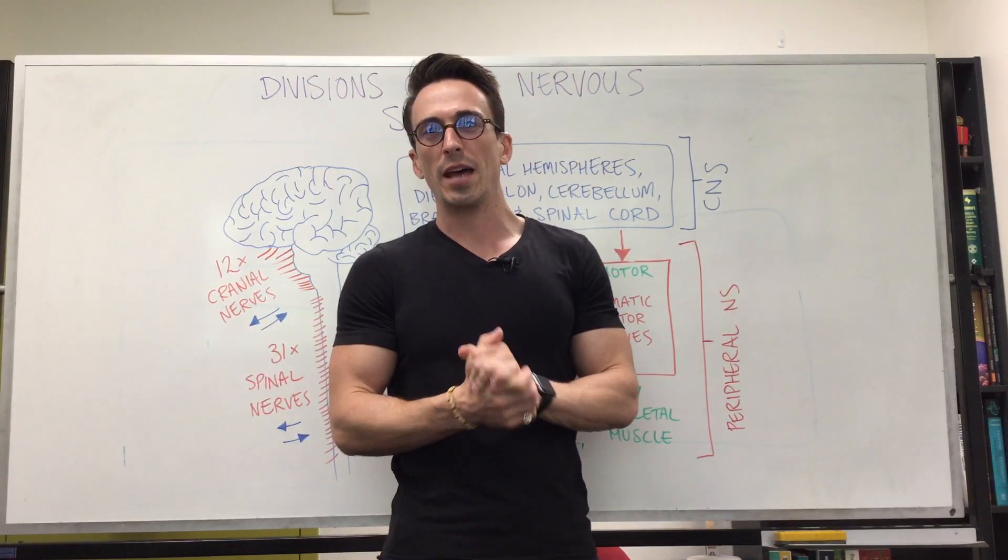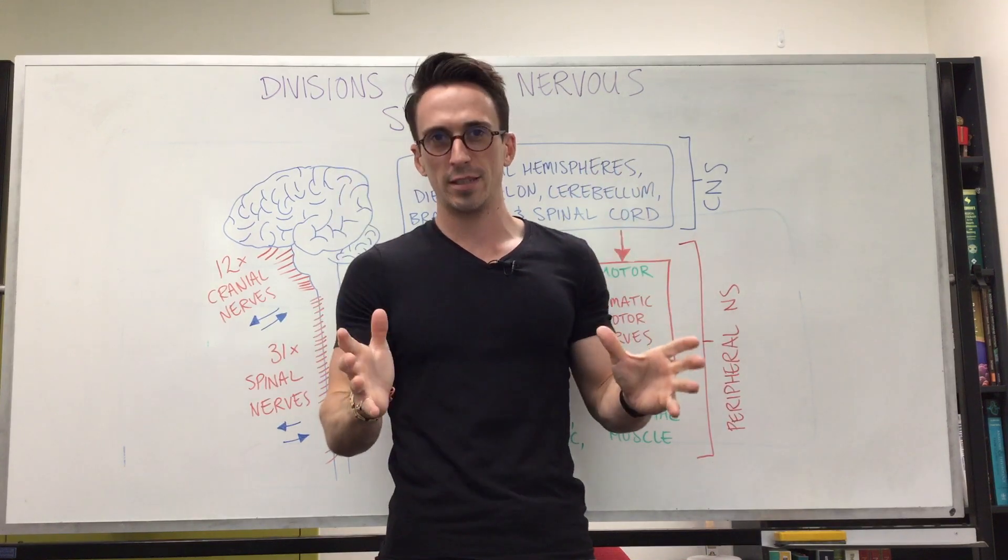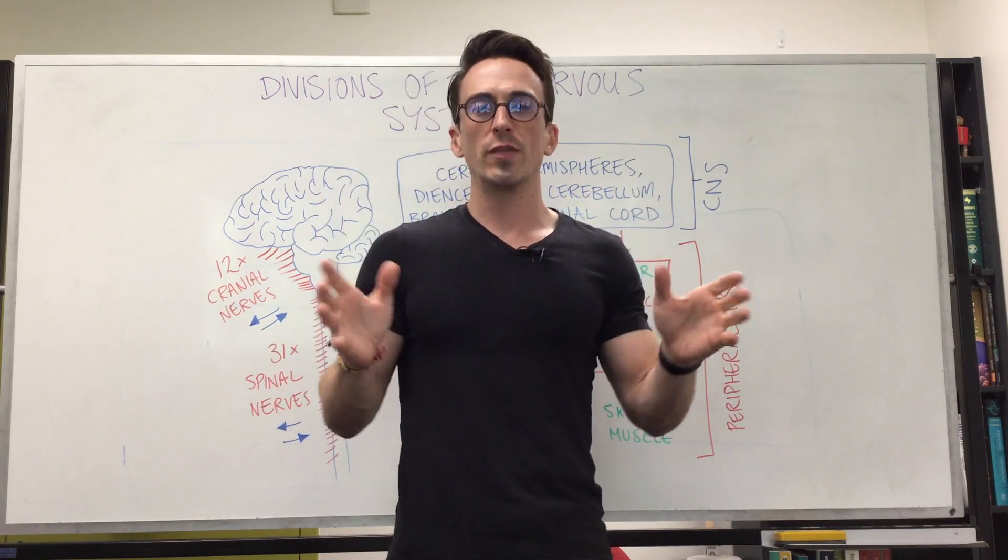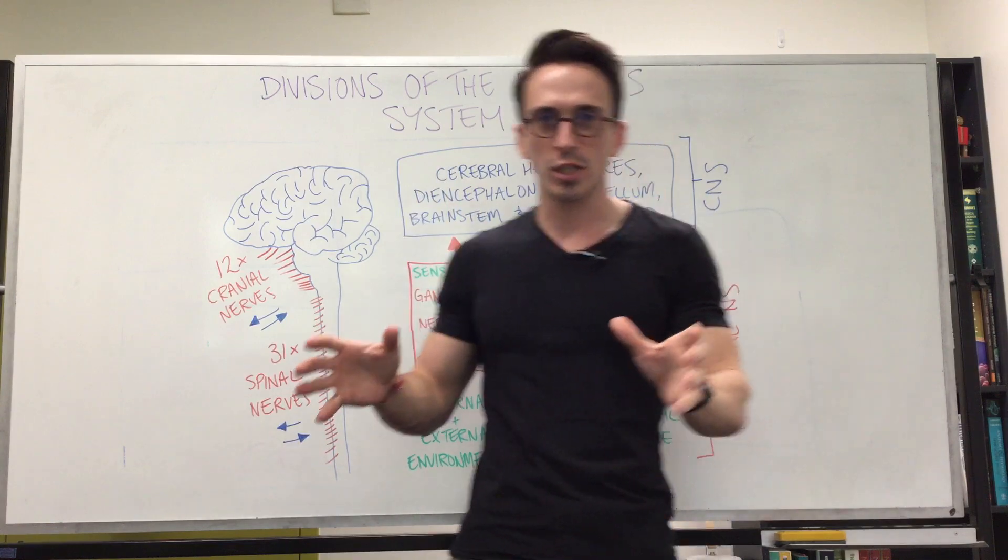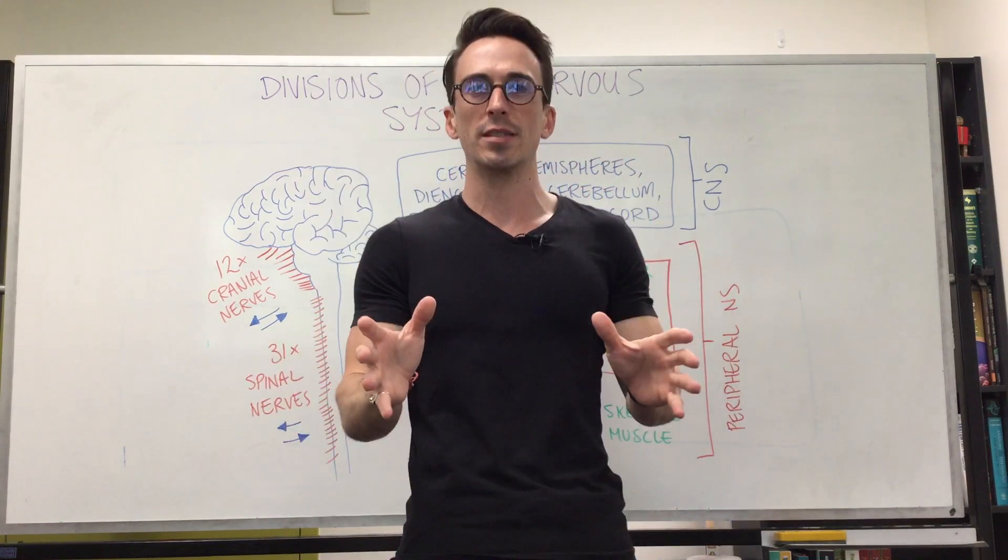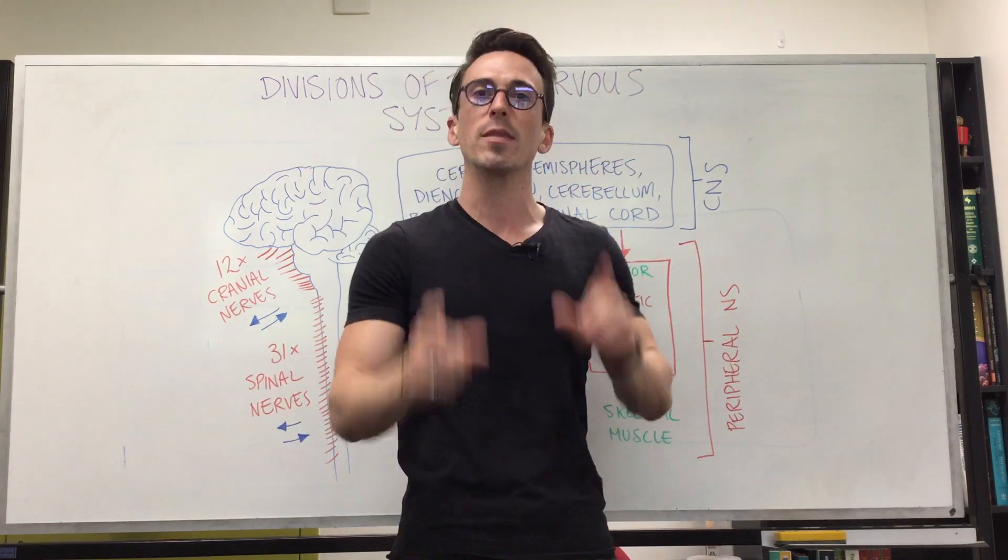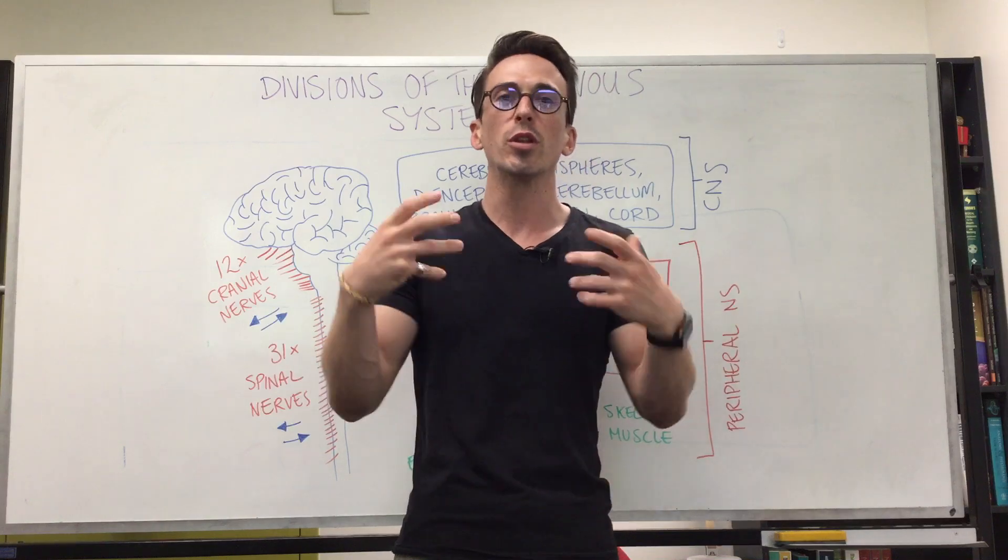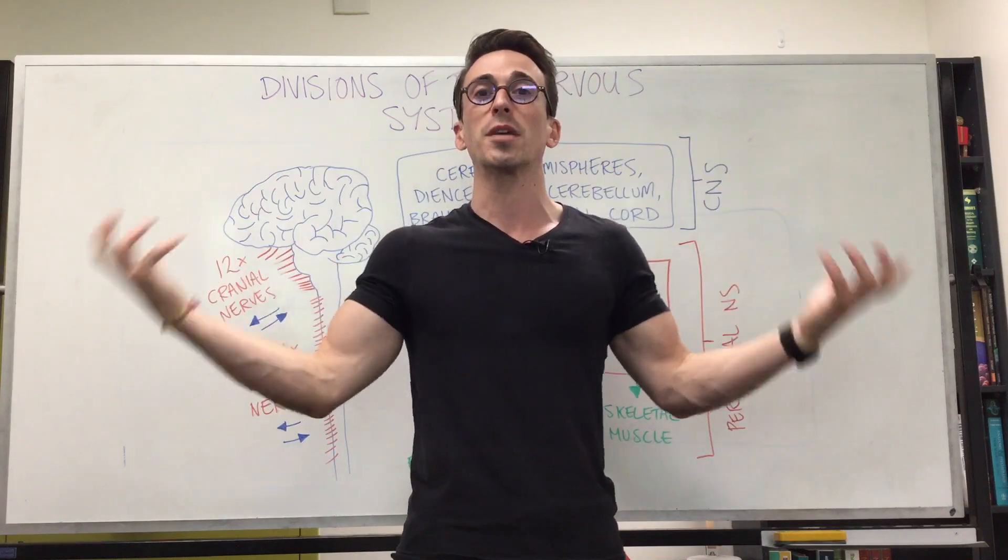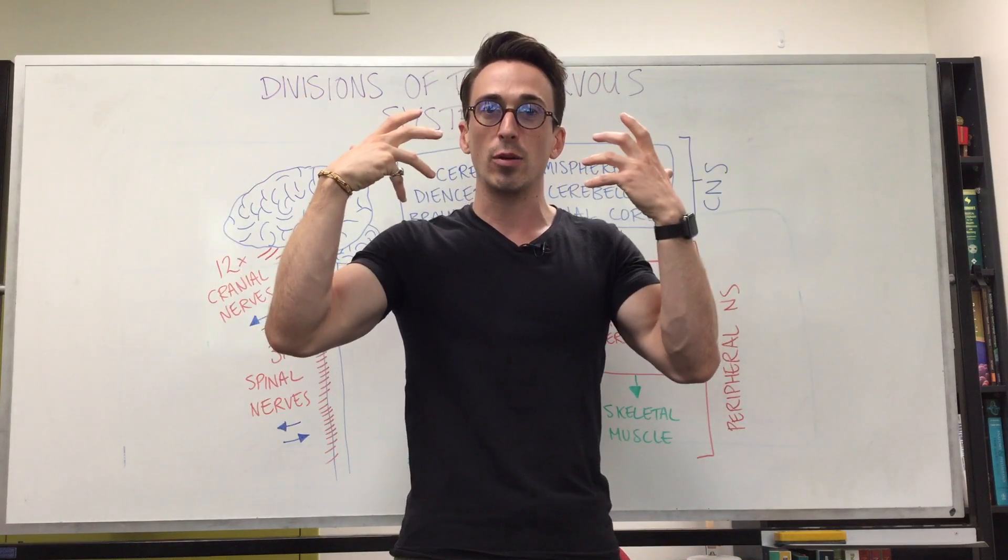Hi everyone, Dr. Mike here. Let's look at the way we divide the nervous system. We actually divide the nervous system anatomically and physiologically into the central nervous system, that's our brain and spinal cord, and the peripheral nervous system, which is all the nerves that shoot out and away and also come back in to the brain and spinal cord.